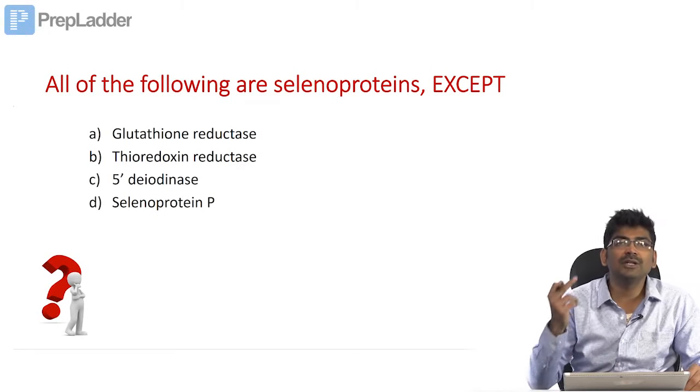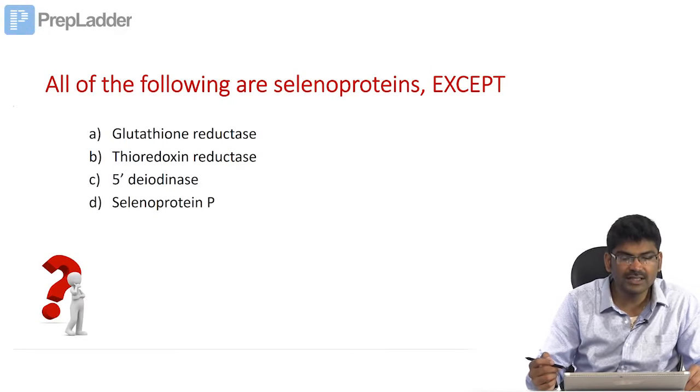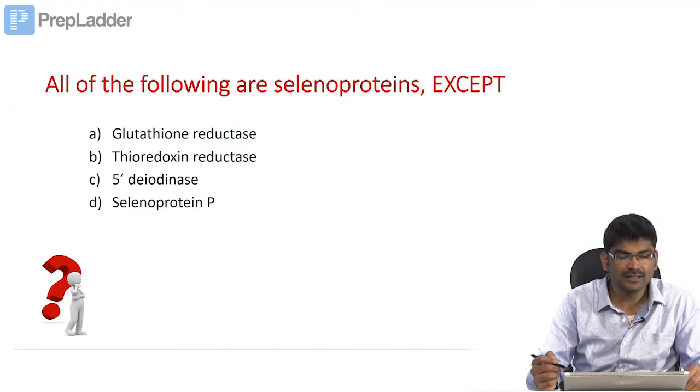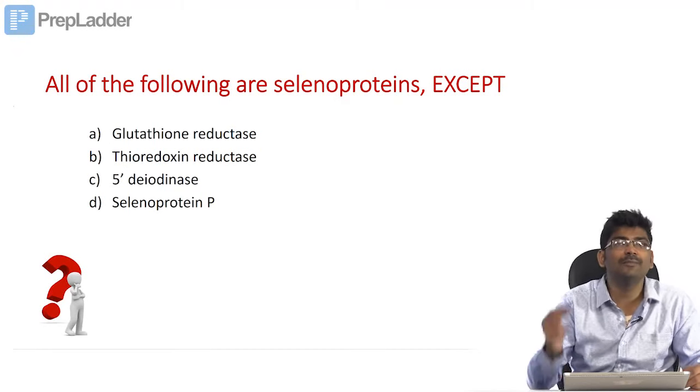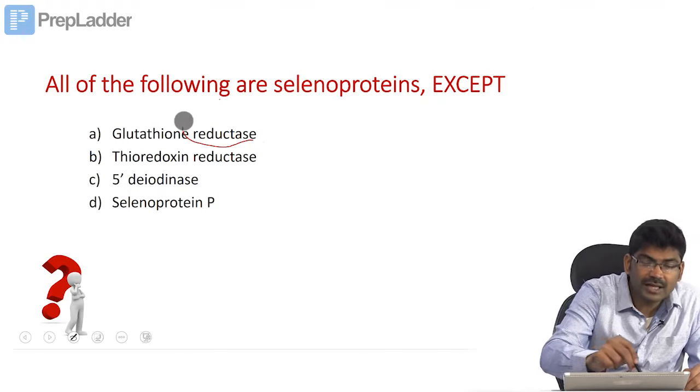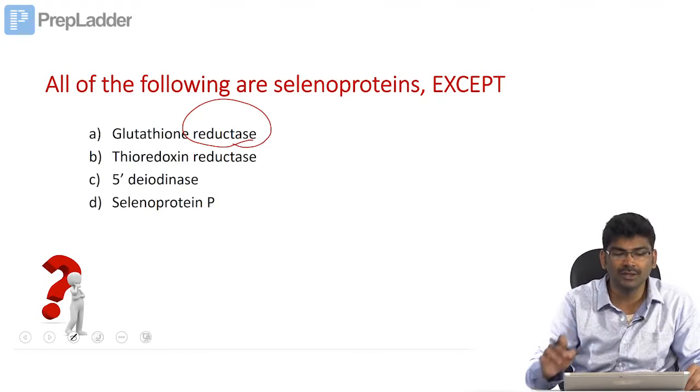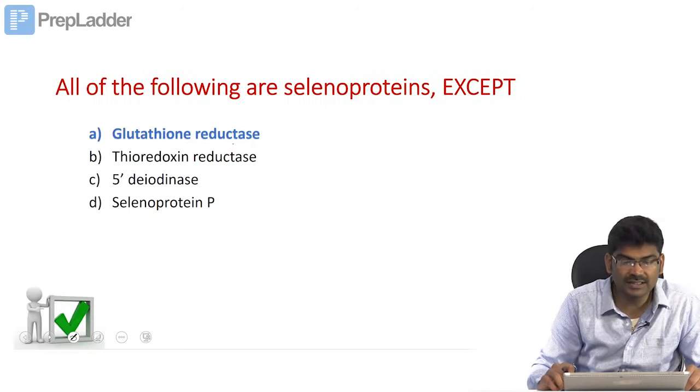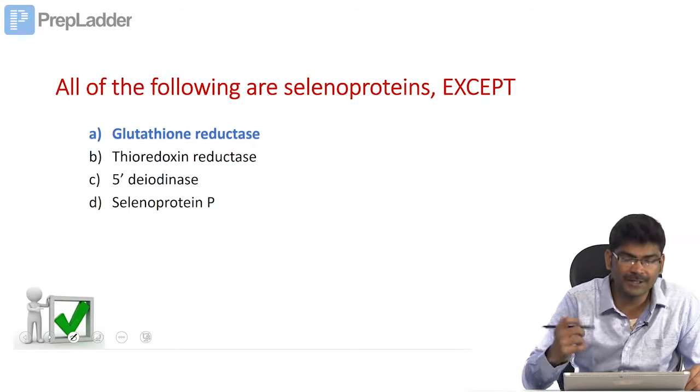All of the following are selenoproteins except glutathione reductase, thioredoxin reductase, 5 prime deiodinase, selenoprotein P. Tell me the answer. It is glutathione peroxidase that is a selenoprotein. Glutathione reductase is a flavoprotein.